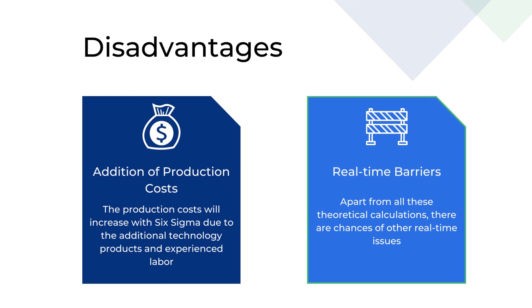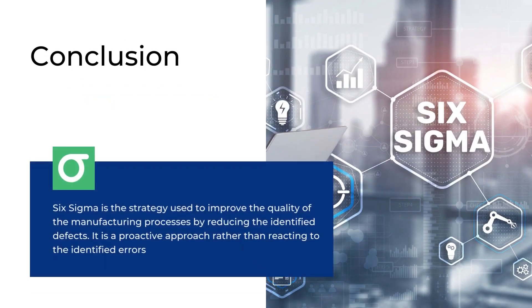We have discussed both the advantages and disadvantages. To conclude: Six Sigma is the strategy used to improve the quality of manufacturing processes by reducing identified defects. It is a proactive approach rather than reacting to identified errors. The quality and standards of the production and products are improved with Six Sigma. It is combined with lean manufacturing to develop Lean Six Sigma, where lean wastes are reduced during manufacturing. It provides opportunities for process improvement and working towards innovation in the products.